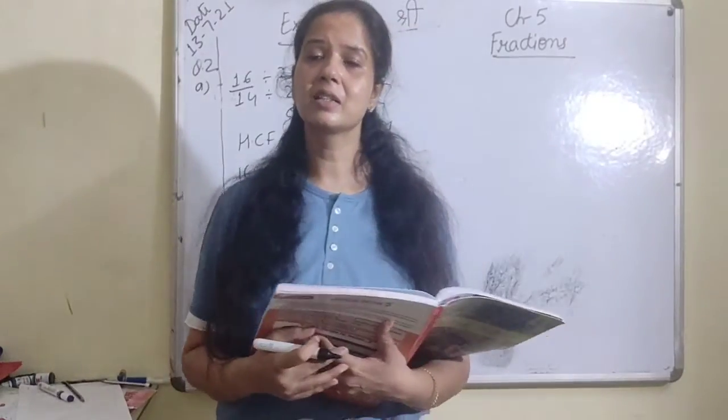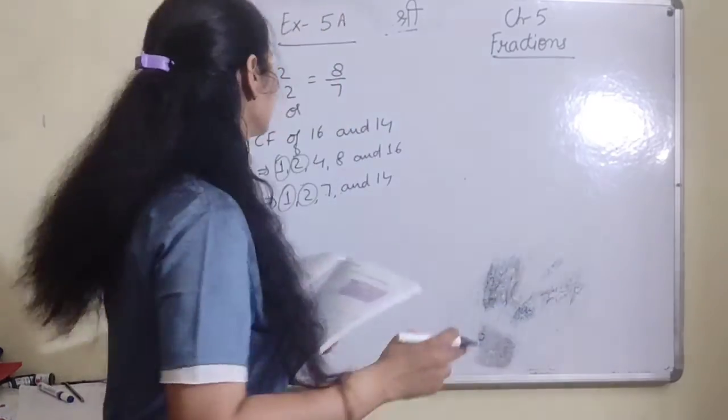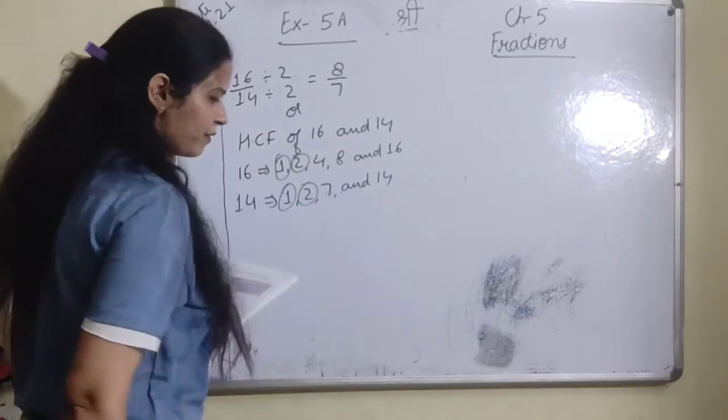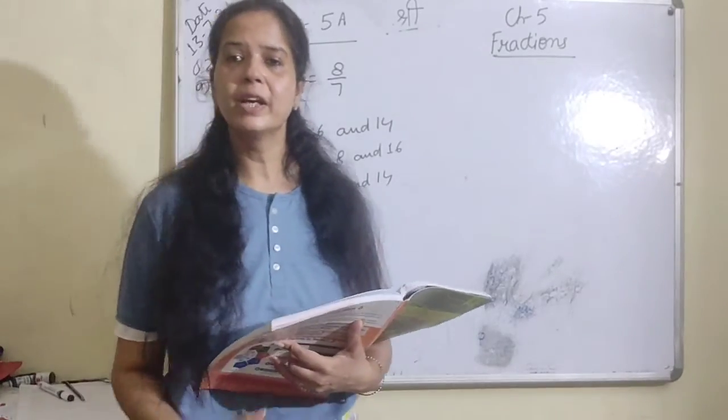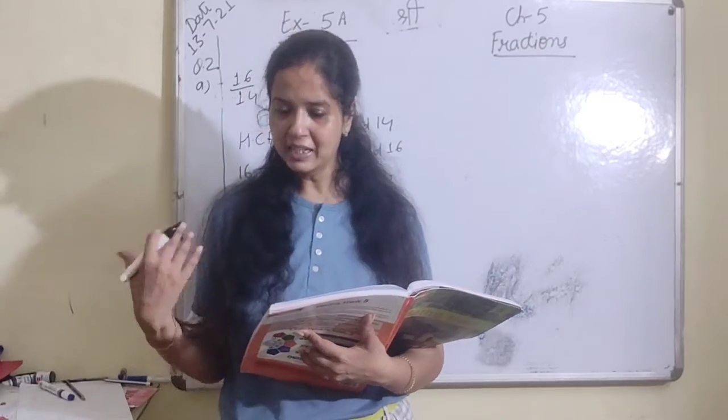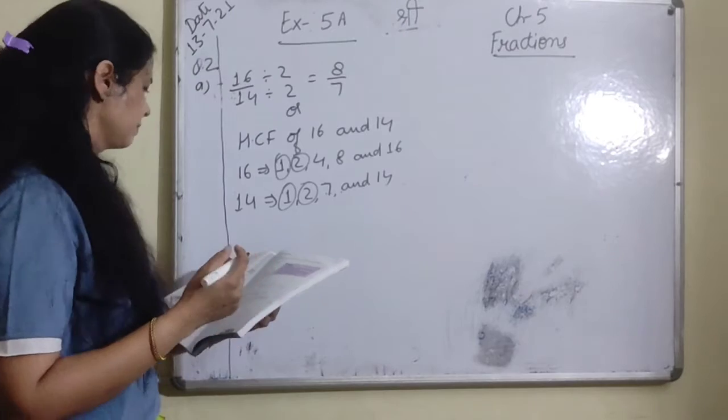Now you will find the common factor. We cannot reduce this time because we don't have any common factor other than one. So 8 upon 7 is already in the simplest form.